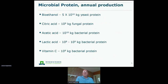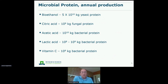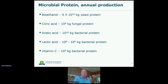Looking at existing protein sources from organic acid production, bioethanol, and vitamin C production — we are dealing with massive amounts of protein that are currently not used or underutilized. For bioethanol, my estimation is that we are dealing with 10^10 or even 10^11 kilograms of yeast protein production per year. For citric acid, we get fungal protein at 10^9 kilograms; for acetic acid, 10^10 kilograms of bacterial protein. This is all potentially very useful and interesting protein that could be used in the food and feed industry.